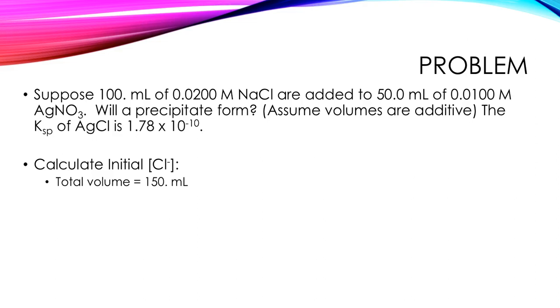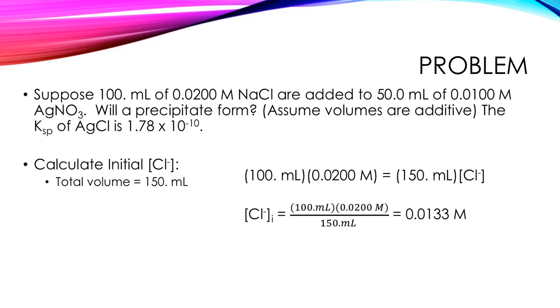We're going to use M1V1 equals M2V2. So we can substitute that in. We're solving for the chloride ion concentration with the new volume of 150 mils. We can rearrange and substitute. We get a chloride ion concentration of 0.0133 molar. Great. That makes sense. My volume went up. My molarity should go down.